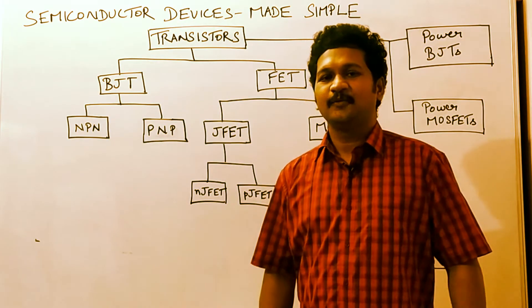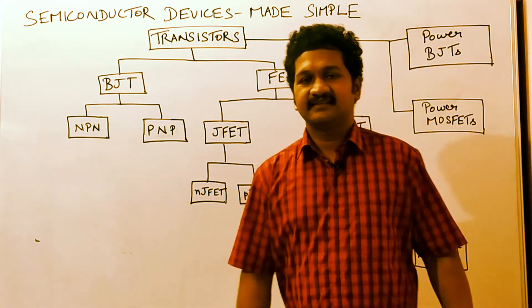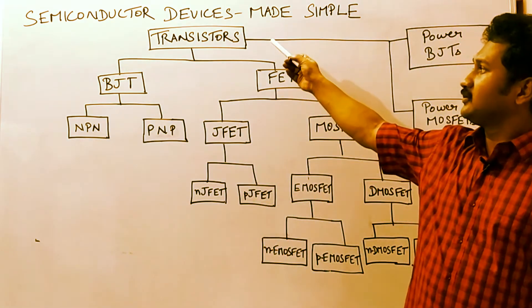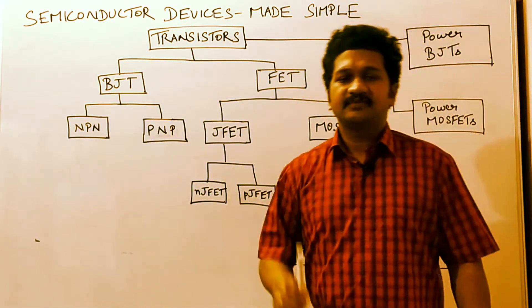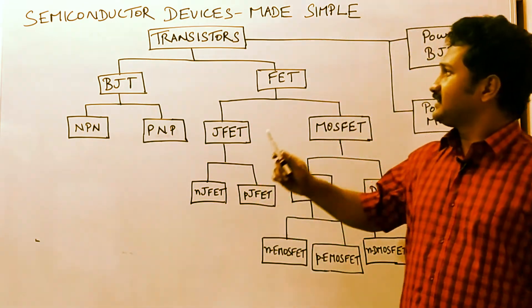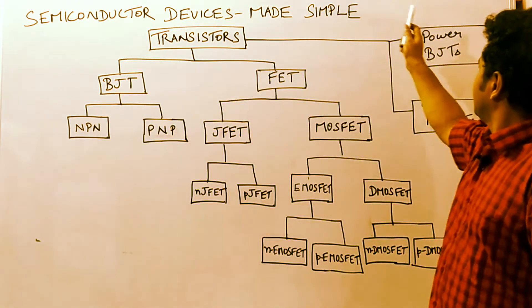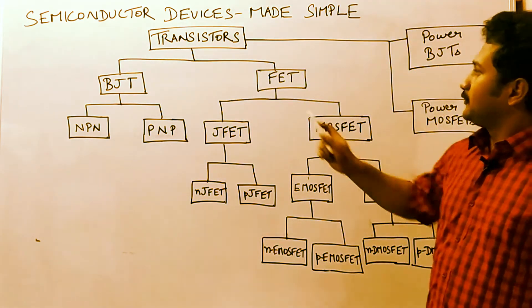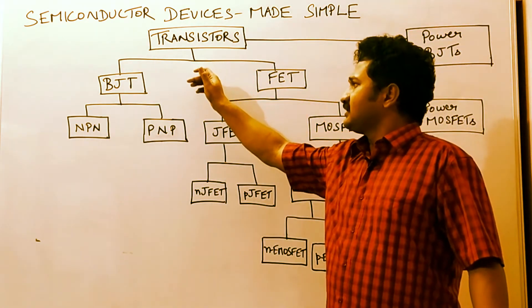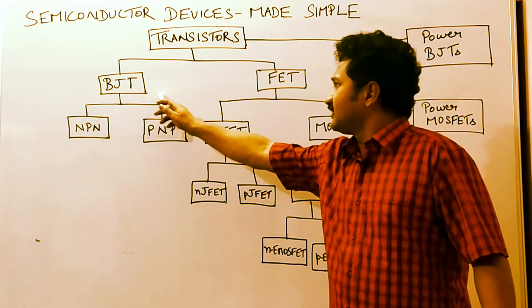Hello everyone, welcome to my channel. In this lecture series, I am going to discuss transistors and different types of transistors. Basically, there are normal transistors and power transistors. With respect to normal transistors, we have BJT, bipolar junction transistor, and field effect transistor.